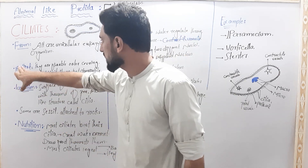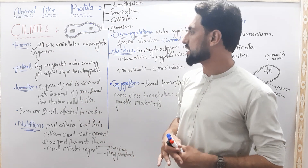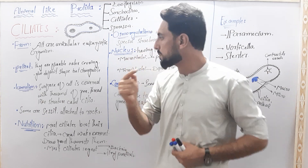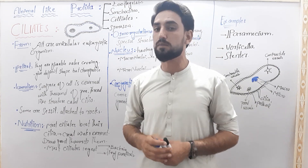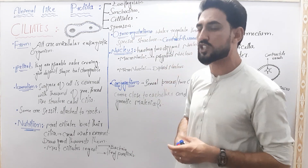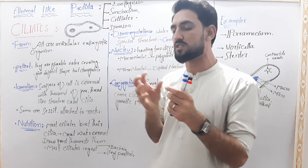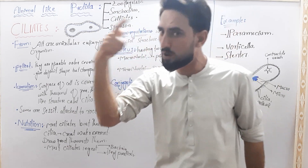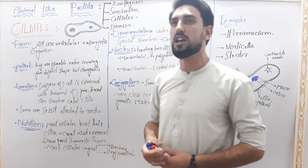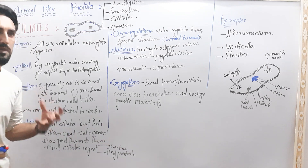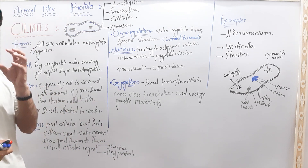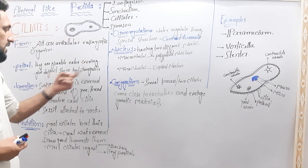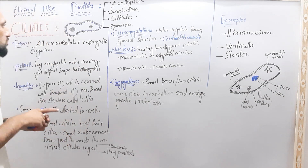The next important term is about the ciliates: the pellicle. You can see the outer cover of the ciliates. The pellicle should be changeable — if the shape is flexible, the outer cover can change shape. The pellicle is the outer covering of the cell. MCQ important question: what is a pellicle? The pellicle is the outer covering of the cell. It gives a definite shape, but that shape is changeable.